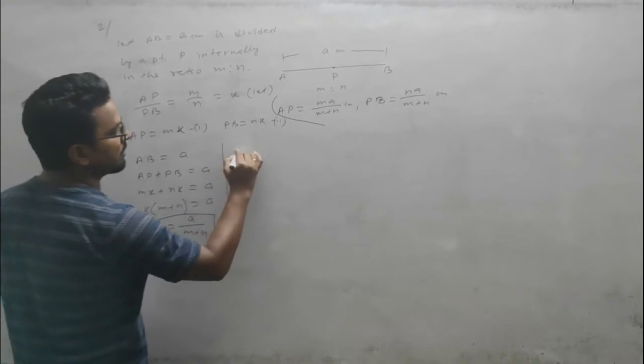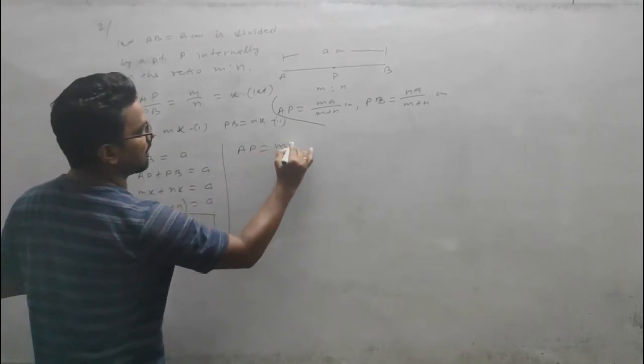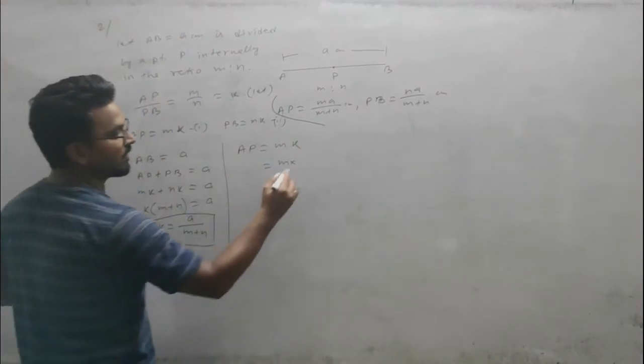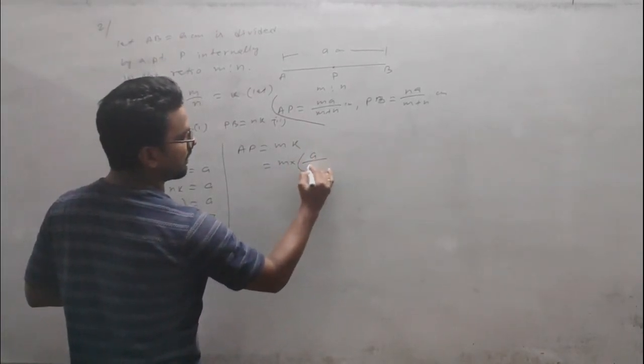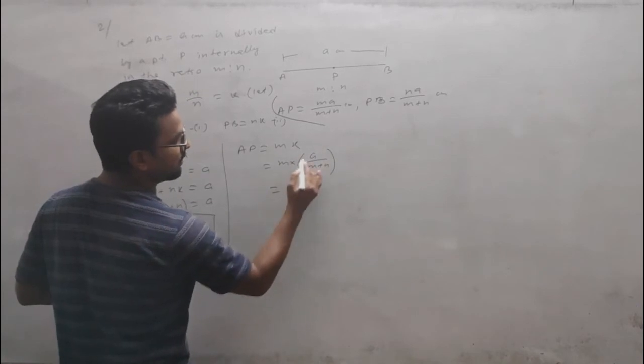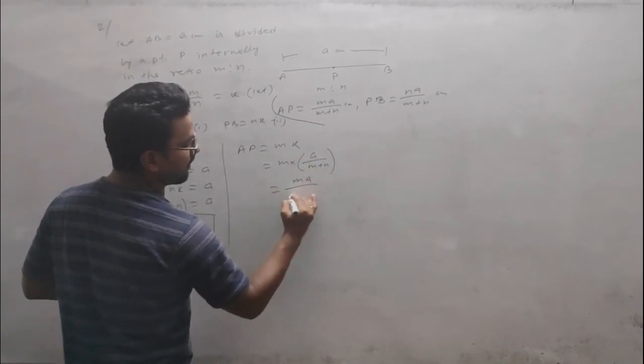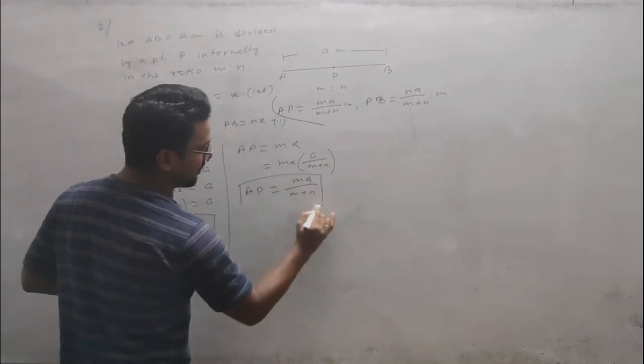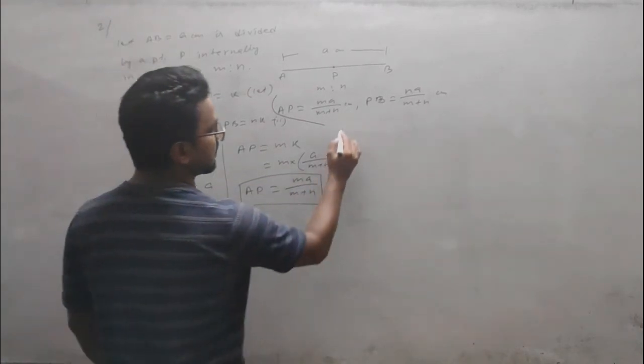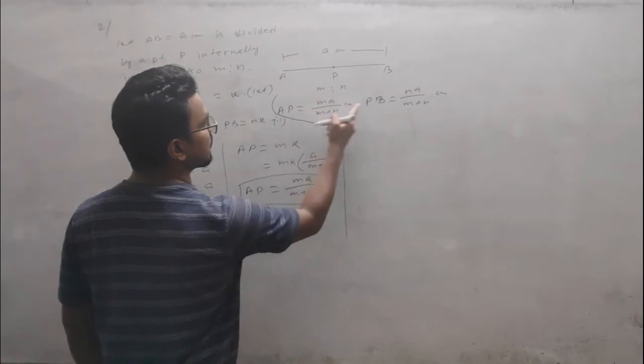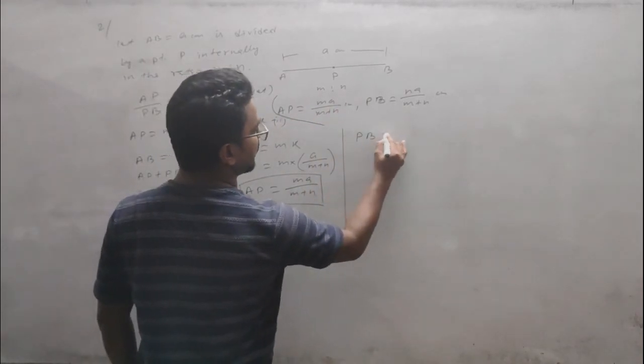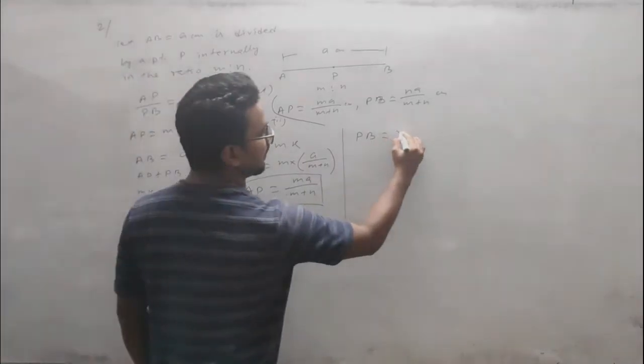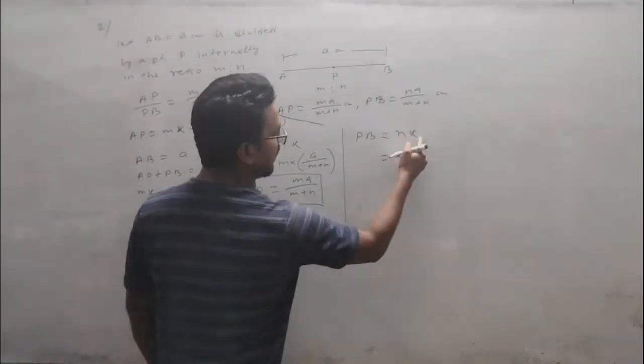To find AP: AP = mk. Substituting the k value: k = a/(m+n), so AP = m × a/(m+n) = ma/(m+n).